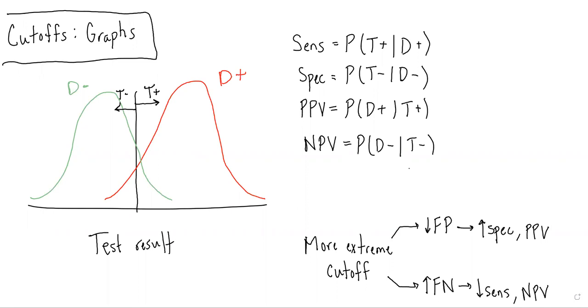but often the way that it's tested on the exam is through the use of graphs and really trying to interpret graphs and figuring out how changes in cutoffs will change the testing characteristics we've talked about: sensitivity, specificity, PPV, and NPV.